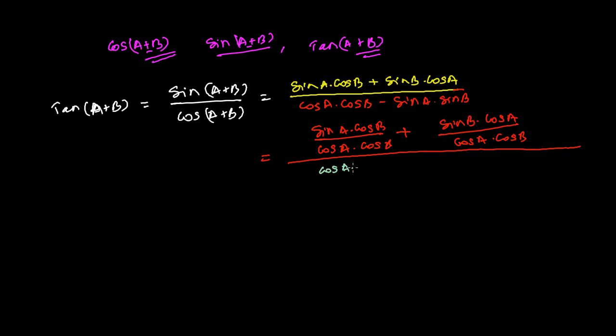That is cos A cos B divided by cos A cos B, and then minus sine A sine B divided by cos A cos B.